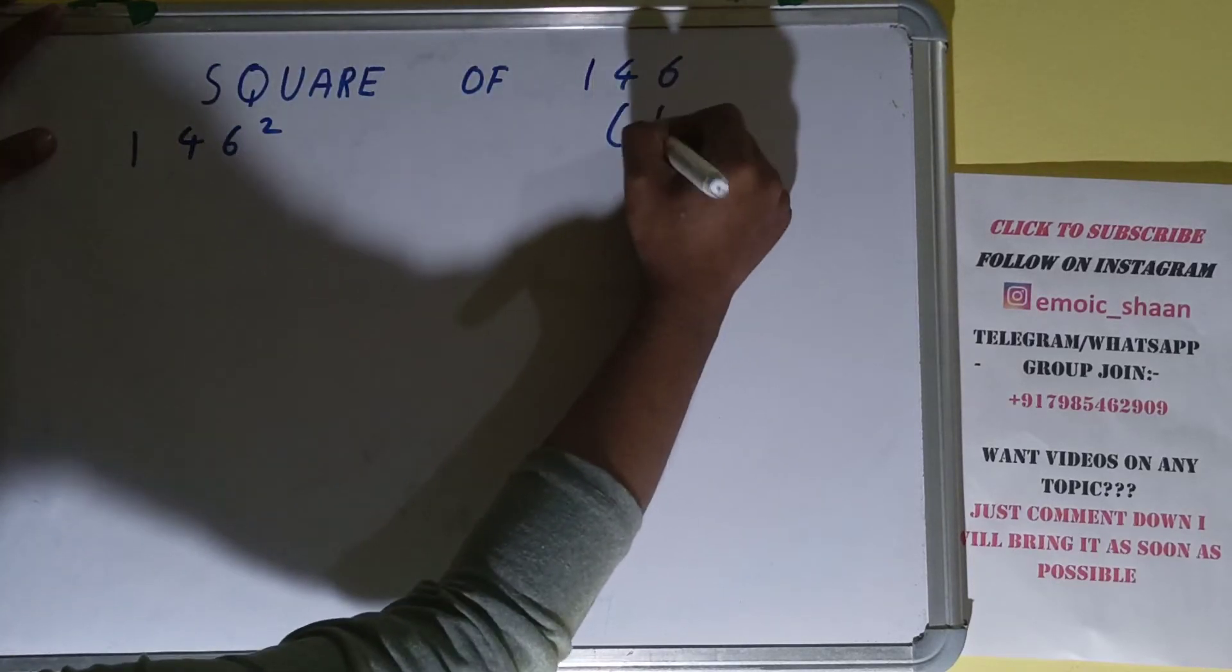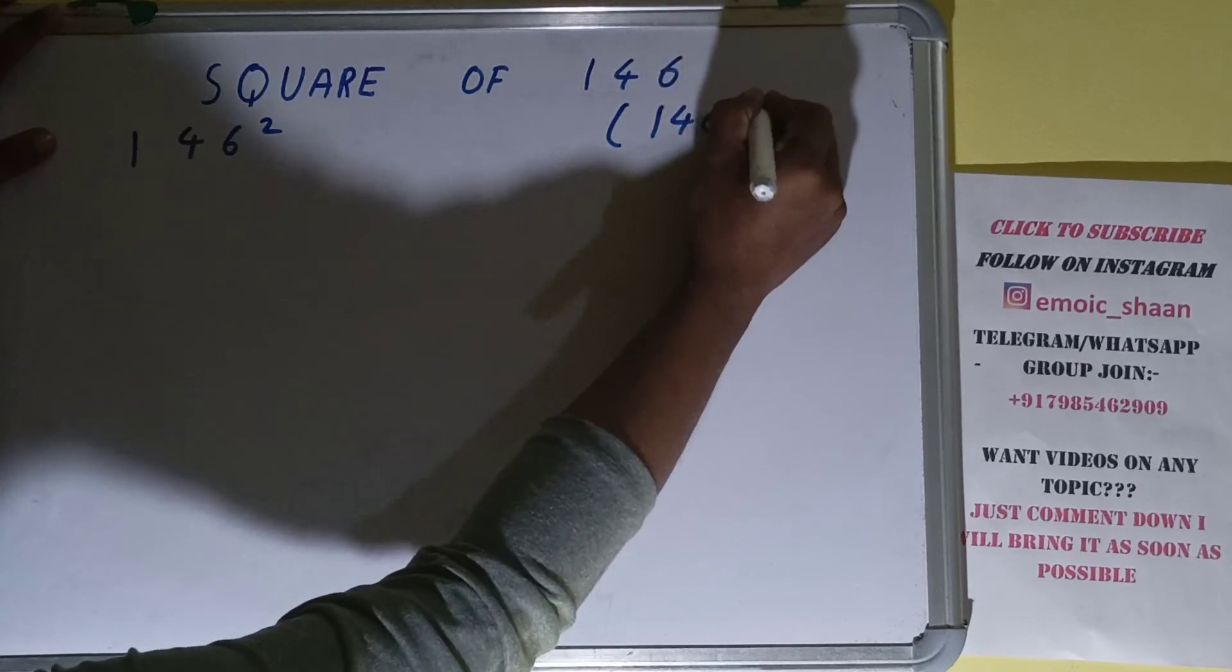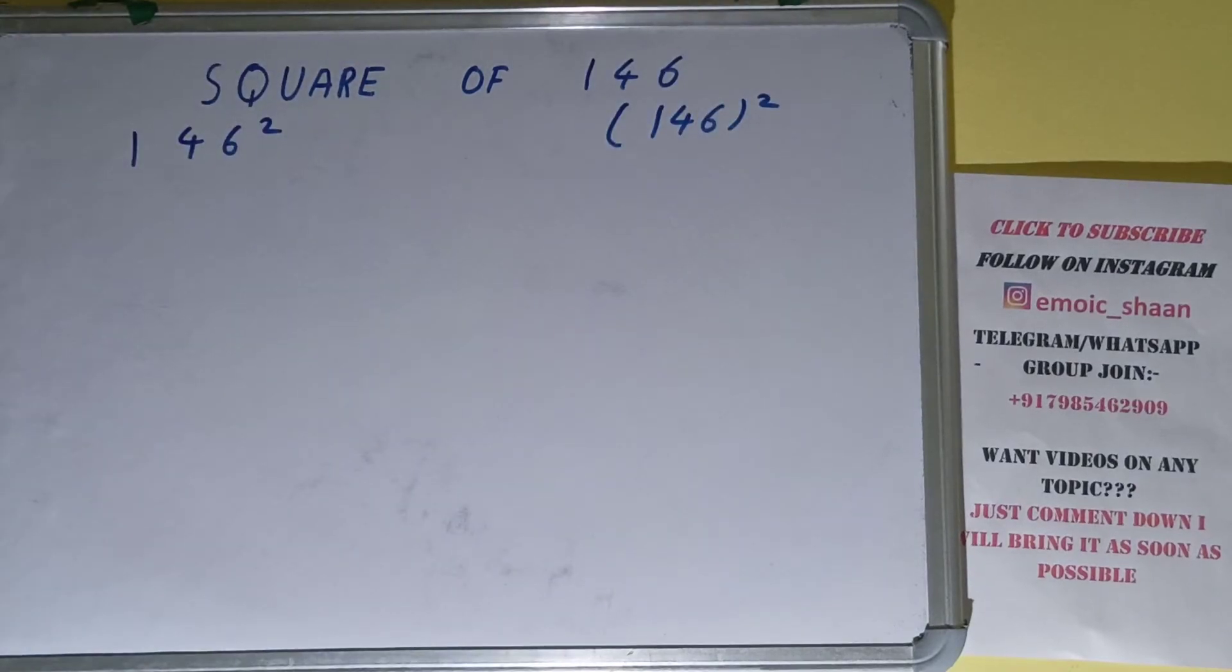the power 2, or inside bracket 146 outside 2. These all have one and the same meaning - that is, we need to find the square of 146. Now moving on to the solution, square basically means multiplying the